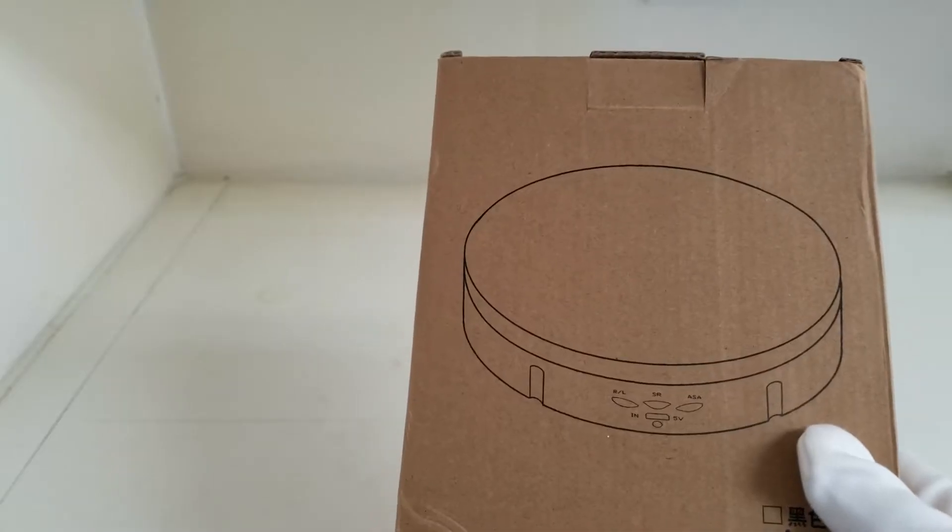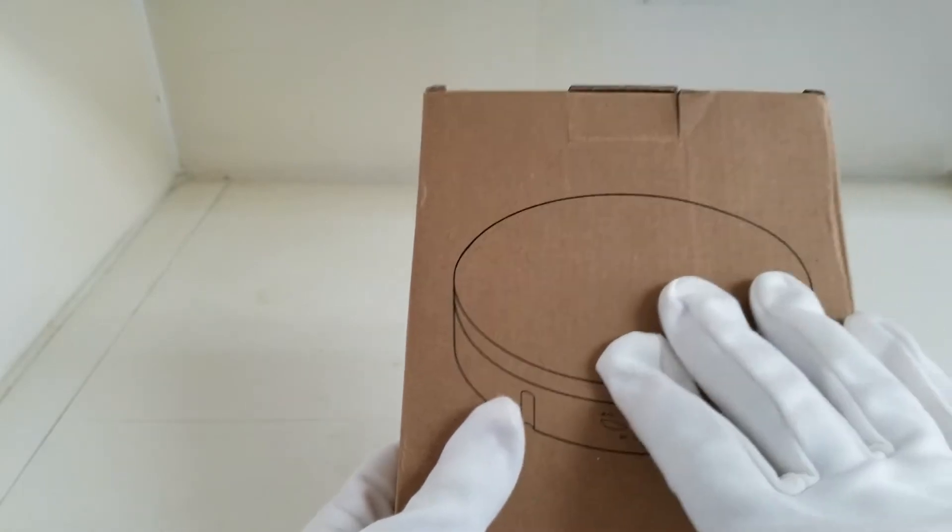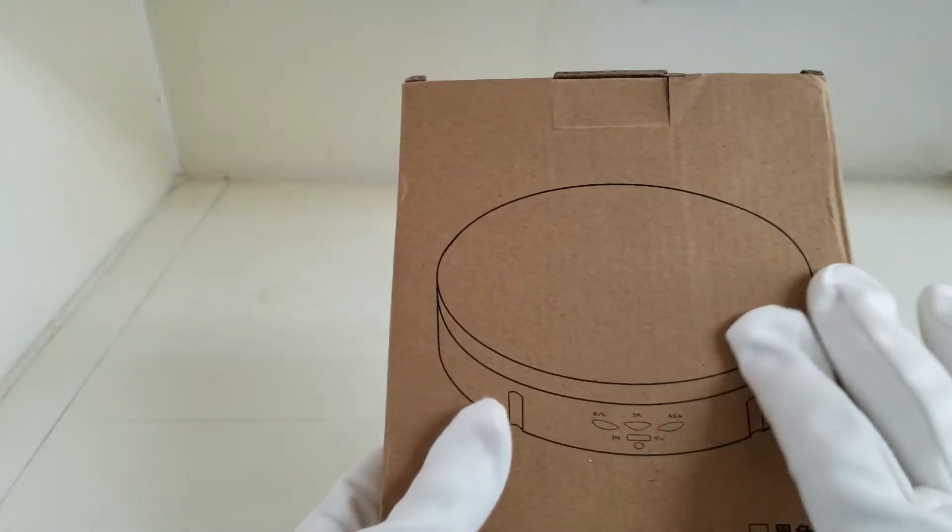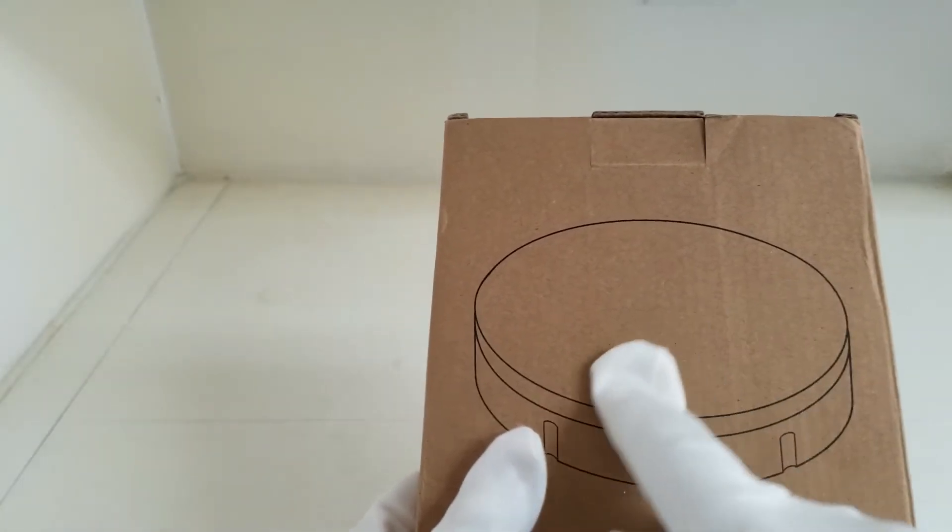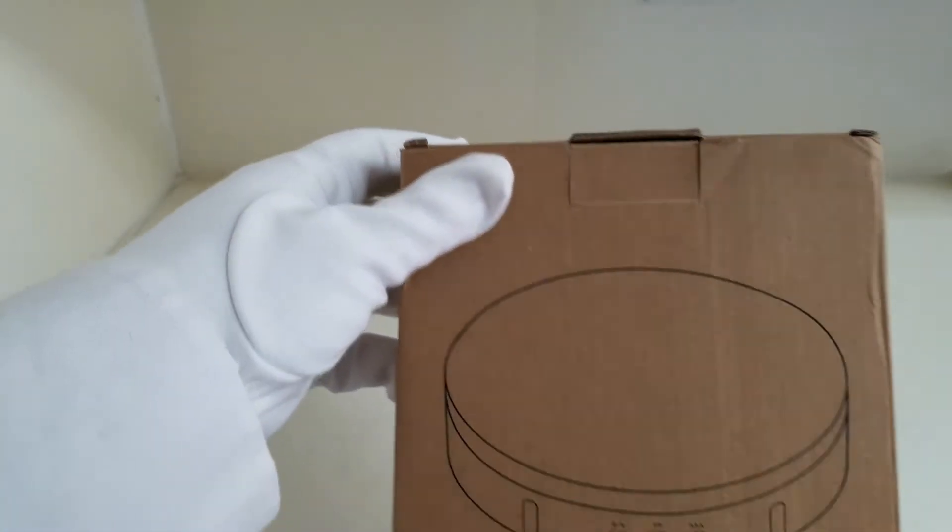Hey guys, welcome back to my channel. This is a Lazy Susan rotating display. What it does is you put your display stuff like figures or action figures on top, then you press a button and it rotates. Let's go ahead and start the unboxing.